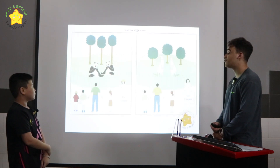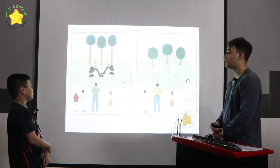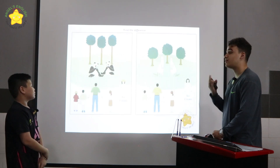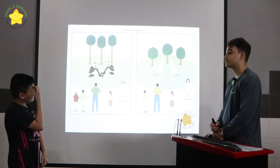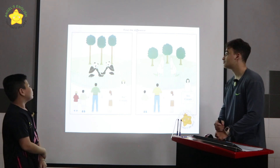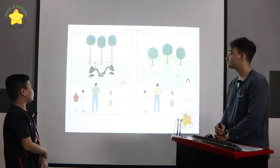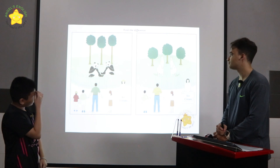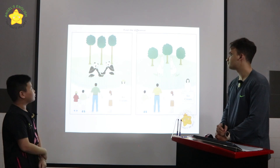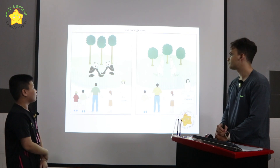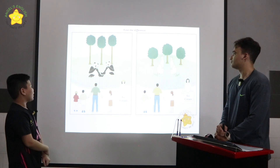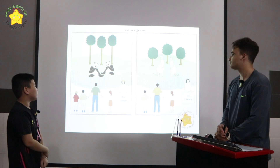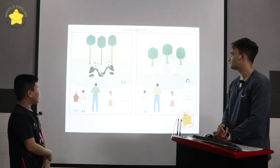Look at the two pictures. There are many differences between the two. Can you please give me three differences? In the first picture, there are three tall trees. But in the second picture, there are three small trees. In the first picture, there are two pandas. But in the second picture, there are two kangaroos.